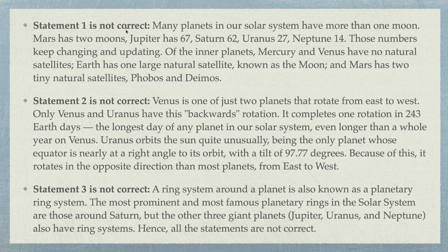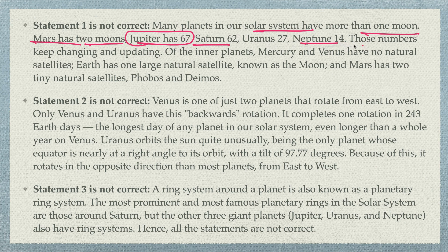Recently, 20 new satellites were discovered for Jupiter, making Jupiter the planet with the maximum number of satellites — previously it was Saturn. Jupiter now has 67, Neptune has 14 or so. These numbers keep changing and updating. Of the inner planets, Mercury and Venus have no natural satellite, Earth has one, and Mars has two tiny moons — Phobos and Deimos.